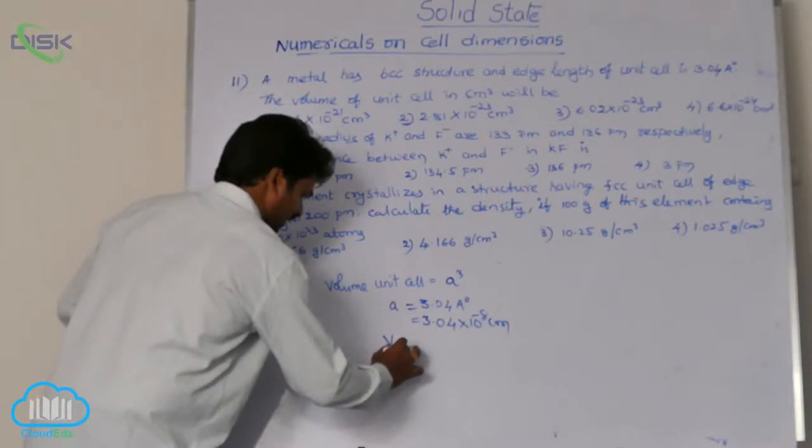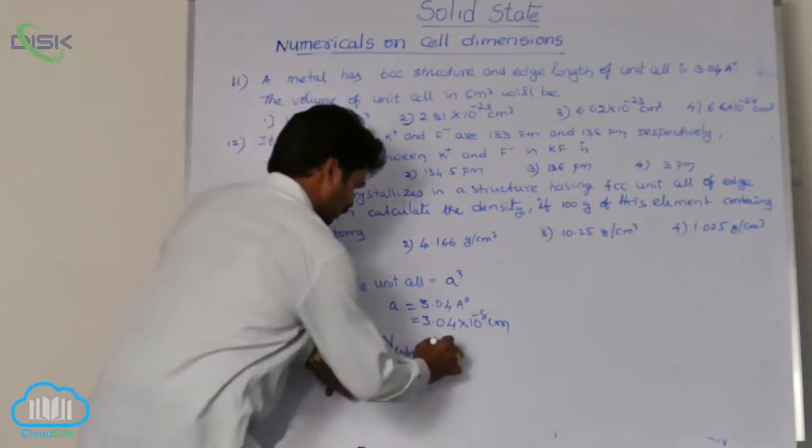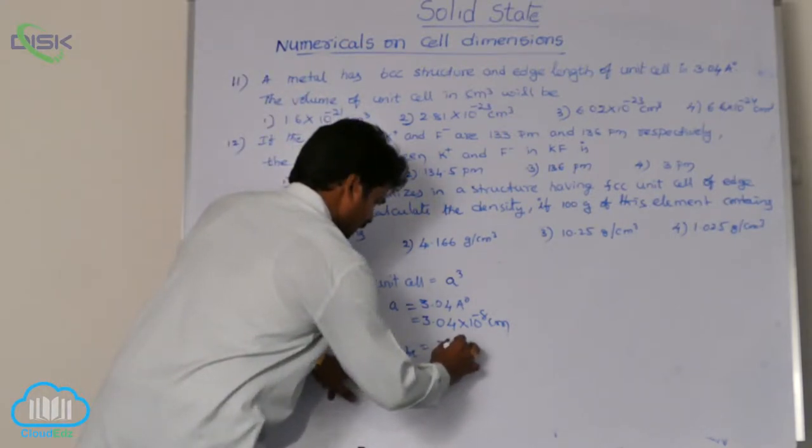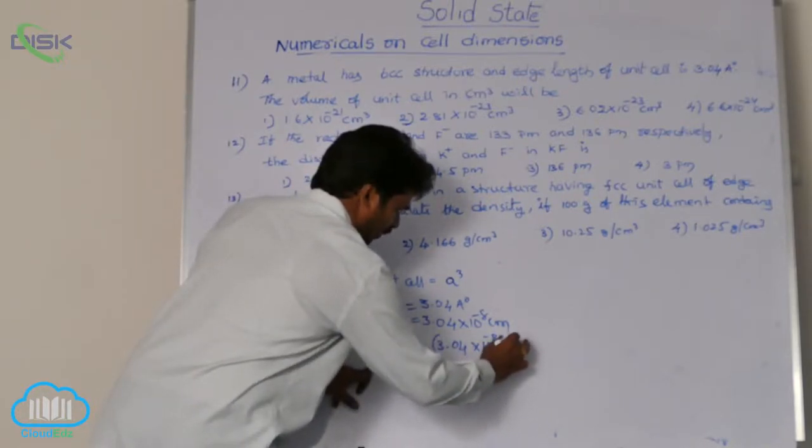Volume of unit cell, that means cubic system equals to A cube. A cube means 3.04 into 10 power minus 8 centimeters whole cube.